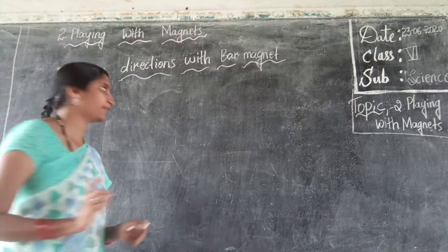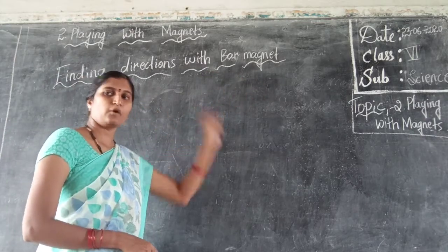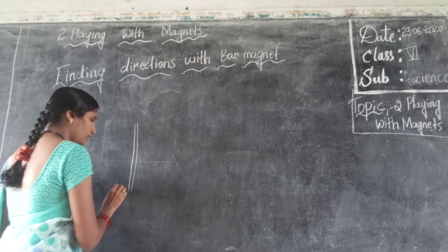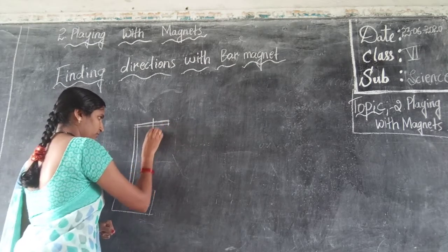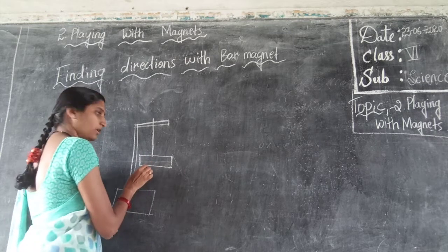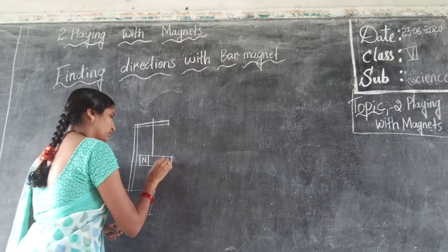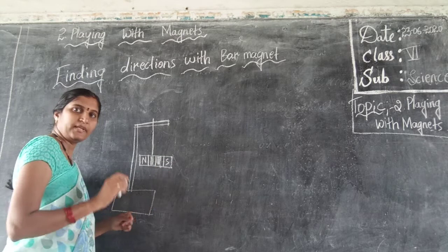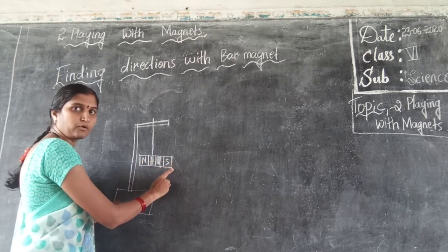Now let us learn about another activity: finding directions with a bar magnet. To do this activity, collect a strand and tie a magnet to it with the help of a thread. After tying the magnet, colour it and write 'north' on one end and 'south' on the other end. After writing north and south, that indicates the direction.